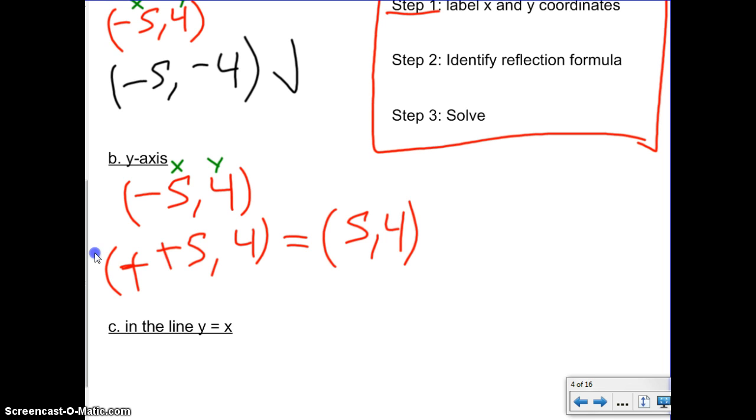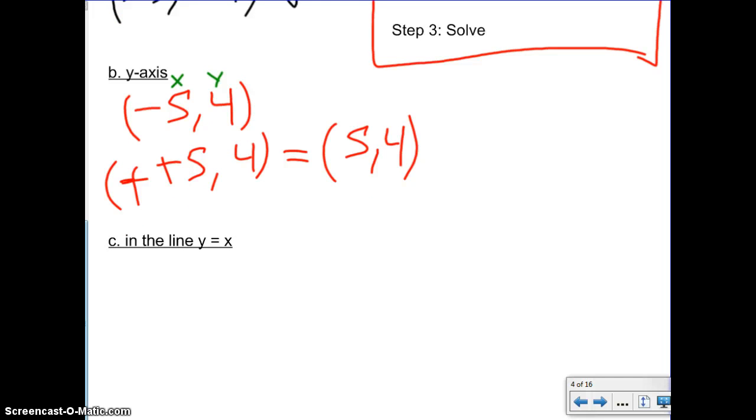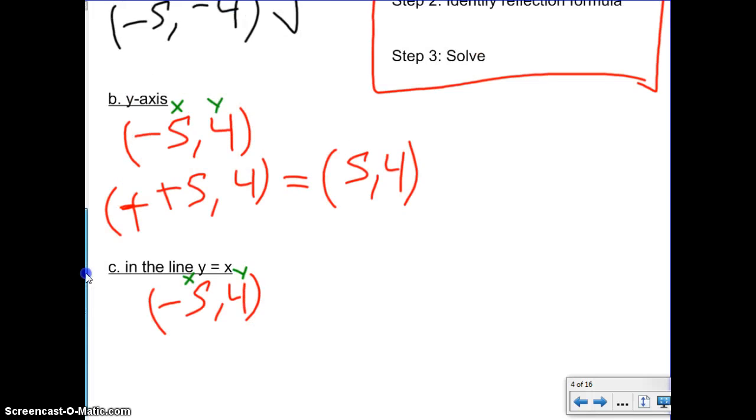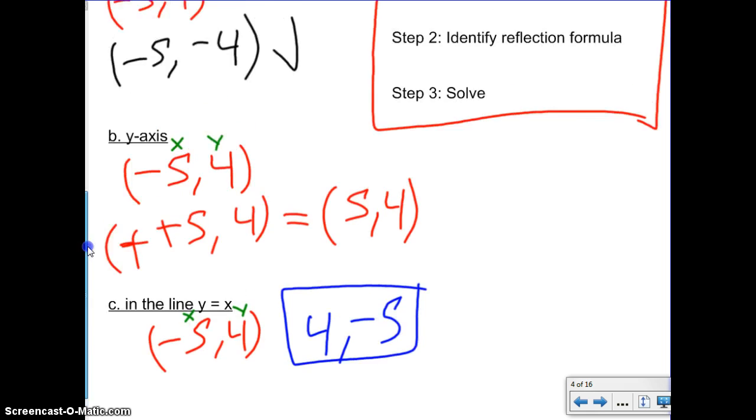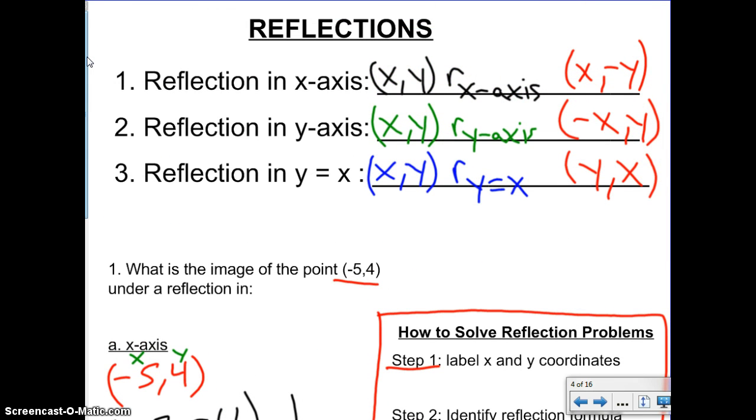And now finally, the easiest one: reflection in the line y equals x. Once again, you got (-5, 4) as our point. Label your x and your y. Now for y equals x, it just says to flip them. So our answer is (4, -5). To answer your problems, all you need to know is these three: if you reflect in the x-axis, you negate the y; if you reflect in the y-axis, you negate the x; and if you reflect in y equals x, you flip them. I think this one's pretty easy. You're all going to do a great job. Good luck.